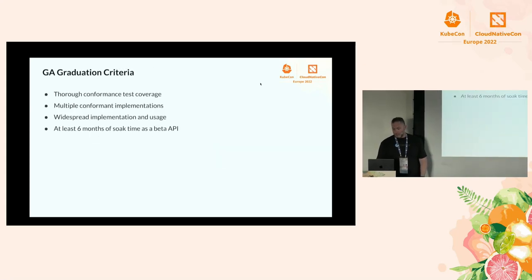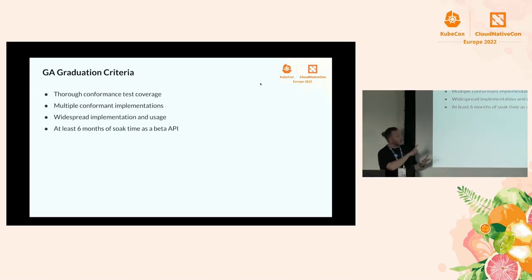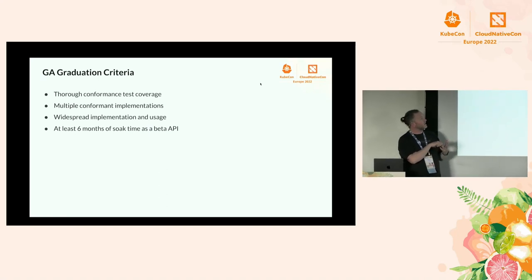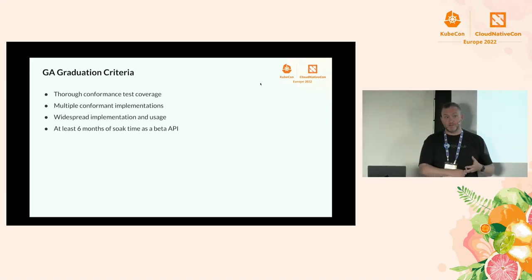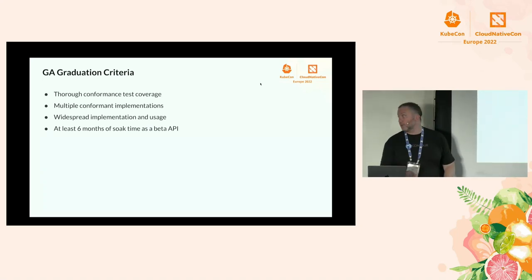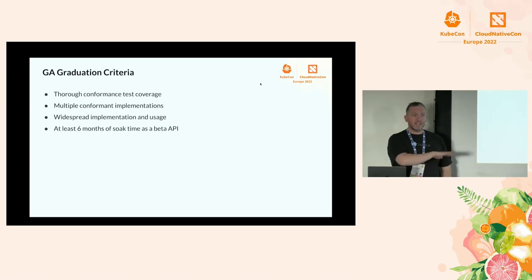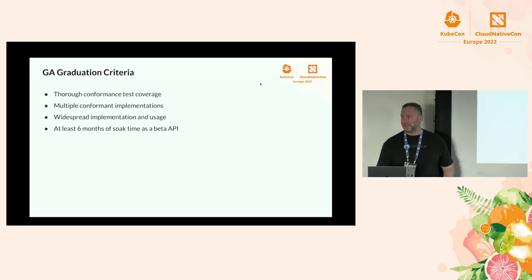Our graduation criteria for GA are: conformance test coverage, multiple conformant implementations that are actually being used, and leaving it as a beta API for at least six months before going GA. Six months may be conservative — we'll probably leave it longer, because GA is forever. Once we commit to GA, that's our commitment that this API will never have breaking changes. We want to be 100% sure there's nothing more to add before making that commitment.